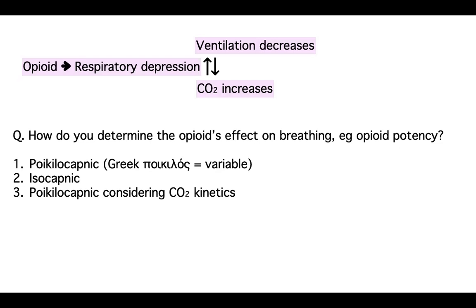From a methodological standpoint — what we call a variable approach — you just administer an opioid and look at the CO2 rise, and you say, well, the ventilation went down a bit. I think that's not the best way to do it. You could also do it isocapnic, in which you raise the end-tidal CO2, keep it constant, give the opioid, and see only the effect of the opioid on ventilation.